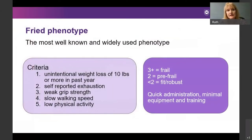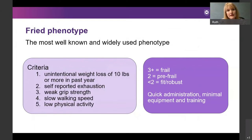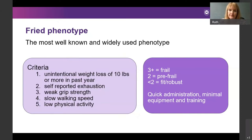The Fried phenotype is the most well-known and widely used phenotypic measure of frailty. First described in 2001 by Linda Fried's group in the United States, it was derived from the cardiovascular health study. It classifies someone as frail if they have three or more of five criteria: unintentional weight loss, self-reported exhaustion, weak grip strength, slow walking speed, and low levels of physical activity. It has been widely validated in community-dwelling populations, is quick to administer, and requires minimal equipment and training. Its disadvantage is that it categorises people into only two or three groups: frail, pre-frail, and fit.